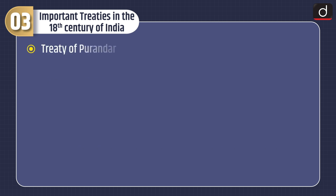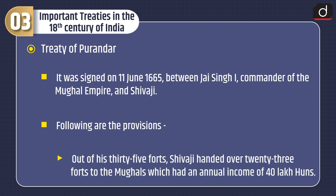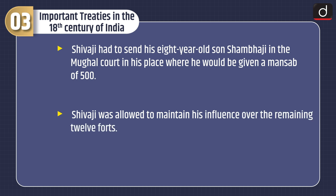Treaty of Purandar. It was signed on 11 June 1665 between Jai Singh I, commander of the Mughal Empire, and Shivaji. Following are the provisions: out of his 35 forts, Shivaji handed over 23 forts to the Mughals, which had an annual income of 40 lakh huns. Shivaji would send his eight-year-old son Shambhaji to the Mughal court, where he would be given a Mansab of 500. Shivaji was allowed to maintain his influence over the remaining 12 forts.